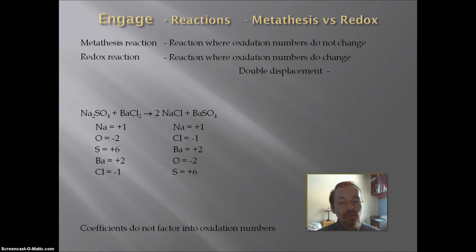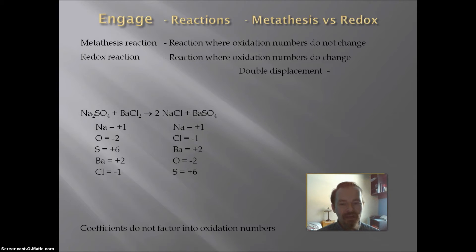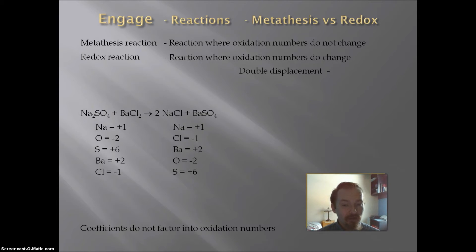As we recall from the oxidation number rules, the oxidation numbers of an ion are always the same — so sulfate's sulfur is plus 6 every time. Looking across reactants and products: sodium is always plus 1, oxygen is always minus 2, sulfur is always plus 6, barium is always plus 2, and chlorine is always minus 1. The oxidation numbers do not change, so this is a metathesis reaction. Double displacement reactions always involve exchanging ions, so they will always be metathesis reactions.